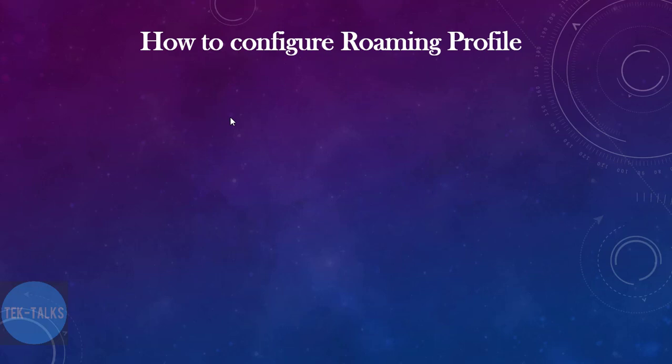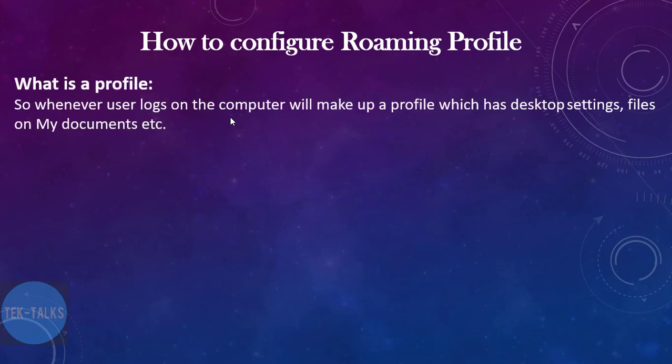First of all we should know what a profile is, how many types of profiles there are, and what is the difference between a roaming profile and a local profile. A profile is basically created whenever a user logs on to the computer. It consists of desktop documents, desktop settings, wallpaper, screensaver settings, etc. This is termed as a profile.